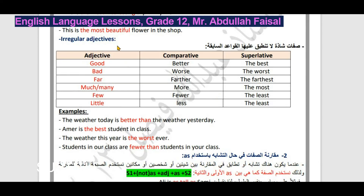هناك صفات شاذة لا ينطبق عليها ER ولا EST ولا more ولا most: good → better than, the best. وكذلك: bad → worse, the worst. وكذلك: far → farther than, the farthest. وكذلك: much/many → more than, the most. وكذلك: few معدود → fewer, the fewest. وكذلك: little غير معدود → less, the least.